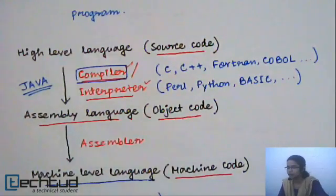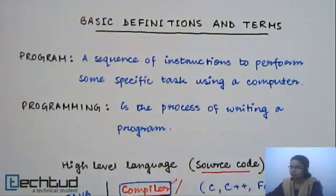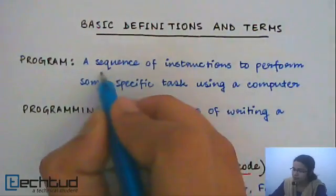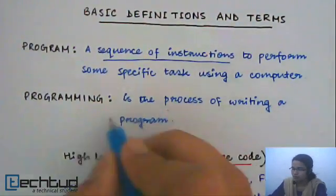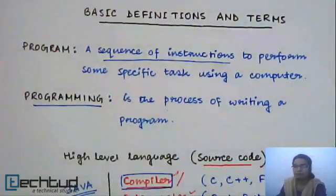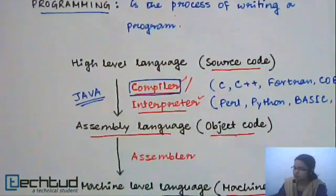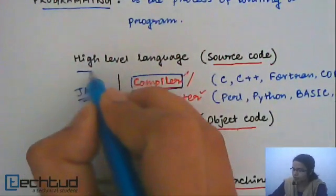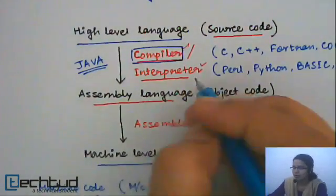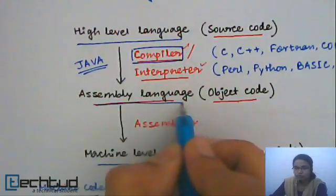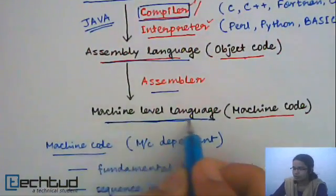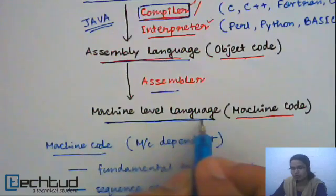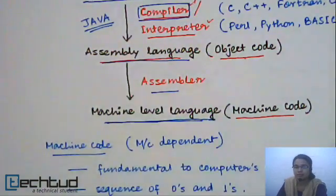Let us revise a little bit. A program is a sequence of instructions to perform some specific task using a computer. The act of writing a program is called programming. First you write your program in a high-level language; a compiler or interpreter converts it into assembly-level language code; then an assembler converts it into machine-level language code — only after that can it be executed by your machine.